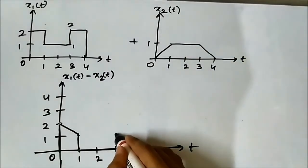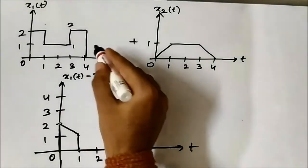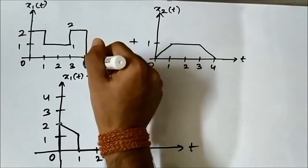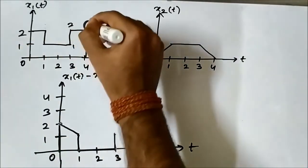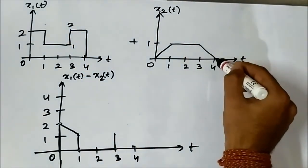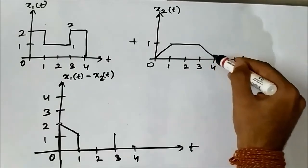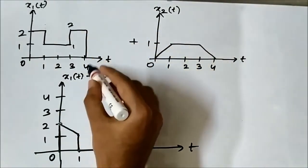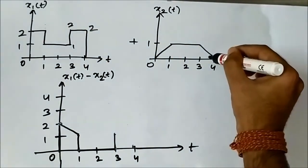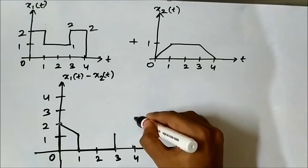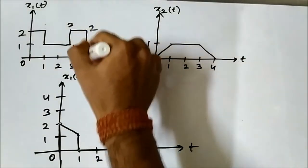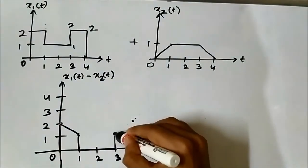At t equals 4, x1(t) has a sharp downward transition from 2 to 0, so we consider both values. x2(t) at t equals 4 is 0. For the initial value 2: 2 minus 0 equals 2. For the final value 0: 0 minus 0 equals 0. So the result transitions downward to 0 at t equals 4.